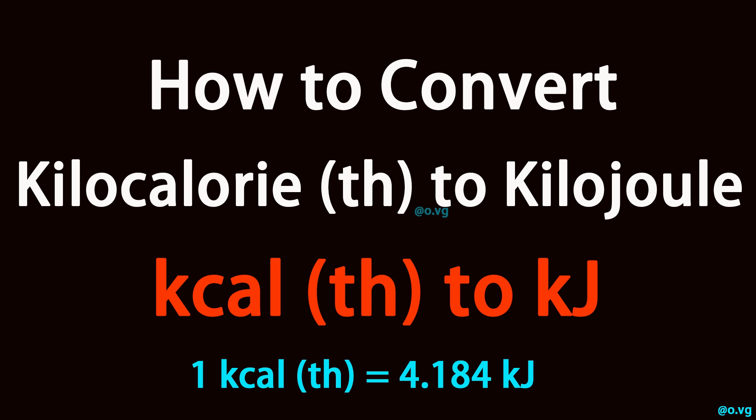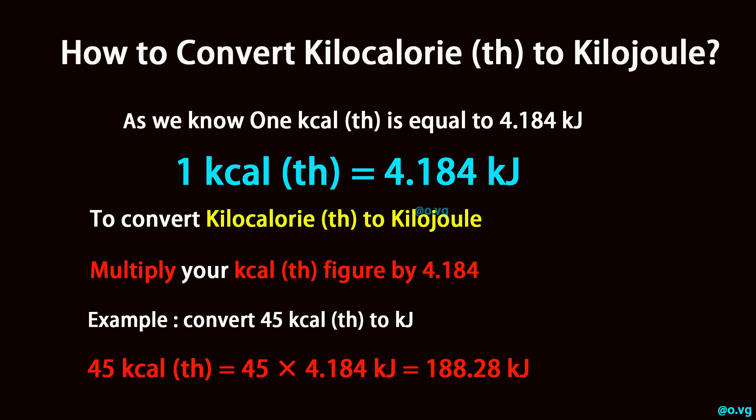How to convert kilocalorie th to kilojoule. As we know, 1 kilocalorie th is equal to 4.184 kilojoule.